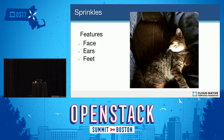Here's another picture of Sprinkles. A little darker, but we can still make out pointy ears. We have a circular face. We can see her feet. Maybe we start to notice some more patterns about the system.